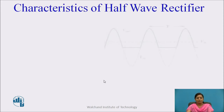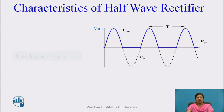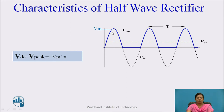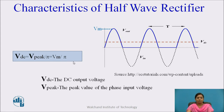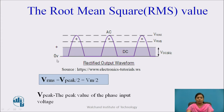Now the characteristics of half wave rectifier. First, the DC voltage appearing across the load: if the peak voltage of the output waveform is Vm, then the DC voltage across the load is equal to Vm upon π. Next, the root mean square (RMS) value: for the output of a half wave rectifier, the RMS value is equal to Vm upon 2.